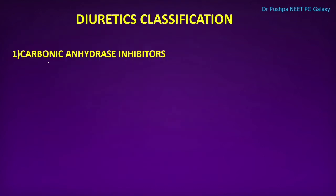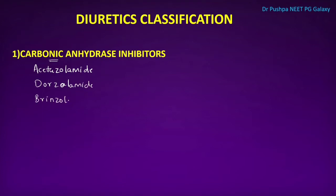The first class is carbonic anhydrase inhibitors. Examples include acetazolamide, dorzolamide, and brinzolamide. The site of action is the PCT, as carbonic anhydrase is present there.